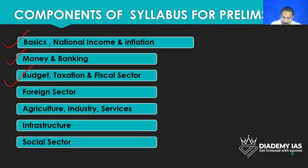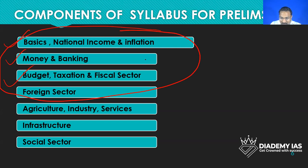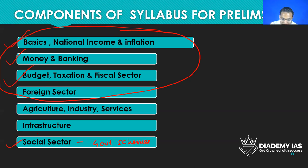Out of these, the chapters that are the heart and soul of the entire paper — money and banking, budget, taxation, fiscal sector, foreign sector — these are the heart and soul. And yes, we can also say social sector, or rather government schemes. If we include government schemes also, then yes, this is the heart of the syllabus because questions will be repeating from these areas only.